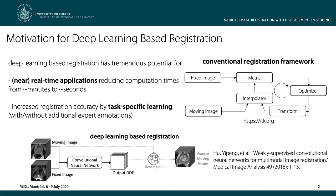typically need a large number of iterations to optimize the target metric. Feedforward convolutional networks also need a large number of iterations during training, but are very fast at inference and can reduce computation times from minutes to seconds. We would further expect increased registration accuracy by unsupervised learning given a lot of images, or supervised learning given expert annotations such as organ segmentations.